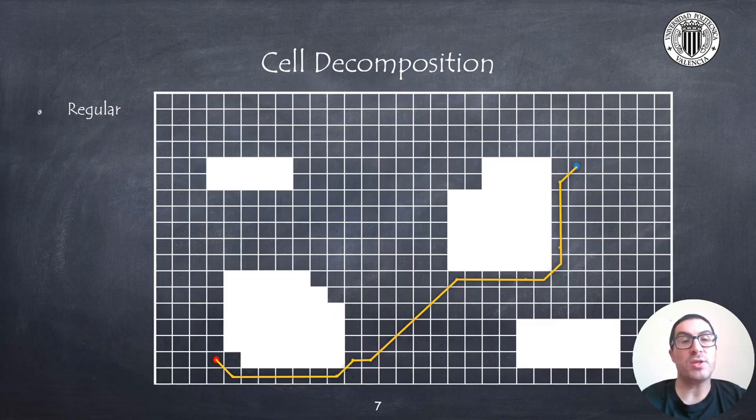Regular cell decomposition is a memory-intensive representation, so it is not suitable for large-dimensional spaces, and therefore, it is practically non-applicable for spaces beyond three dimensions. In the end, there is an inverse relationship between the precision and the used memory.